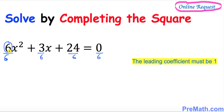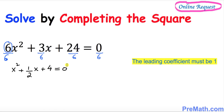So let's go ahead and simplify. 6 over 6 simply becomes 1x squared, plus 3 over 6 which can be written as 1 over 2x, plus 4, equals 0.